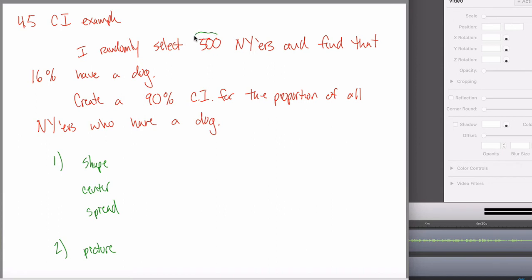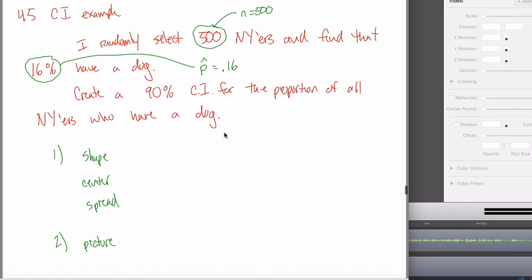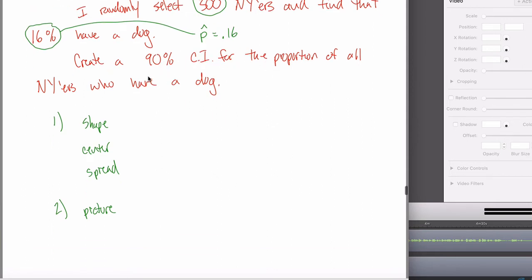Reading the problem: I randomly select 500 New Yorkers — that's our sample size n = 500. And I find that 16% of them have a dog — so this is the proportion of the sample, meaning p-hat = 0.16. And we're asked to create a 90% confidence interval, so our level of confidence is 90%, and alpha = 10%, because alpha is always 1 minus the confidence level.